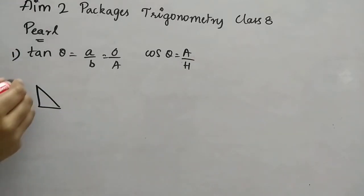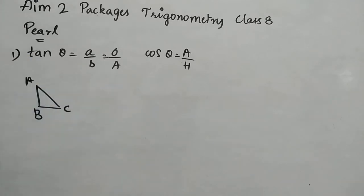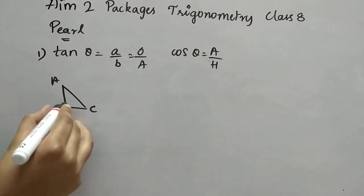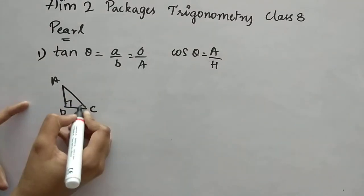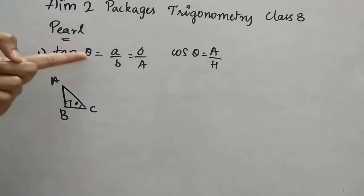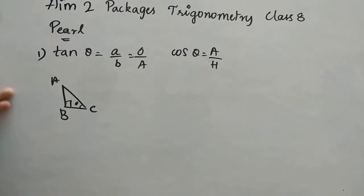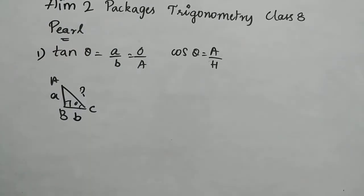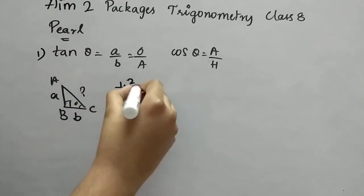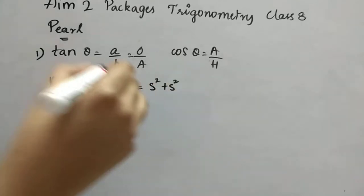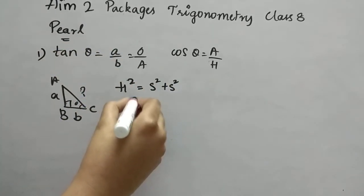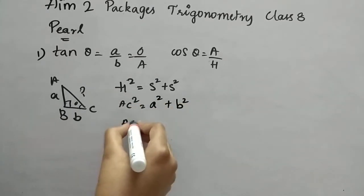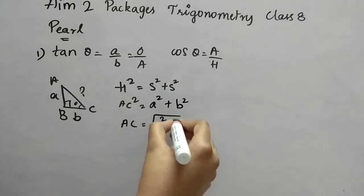I'm drawing triangle ABC here. When we name it, write the values immediately — it will be easy. This will be the point of θ for me. Opposite is A, adjacent is B. So we have to find the hypotenuse. Hypotenuse squared equals side squared plus side squared. So AC² = A² + B², which gives AC = √(A² + B²).